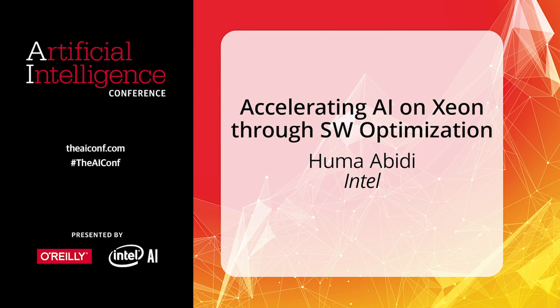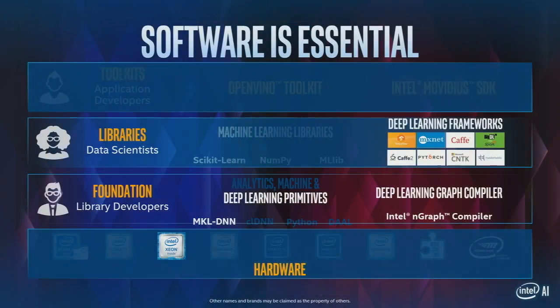I want to highlight some of the key components in making our software optimized and enabling Xeon. Starting with our math kernel library, MKLDNN, which is the math kernel library for deep neural networks. This is an open source library with highly optimized kernel implementations for popular deep learning constructs such as matrix multiplication, pooling, et cetera.